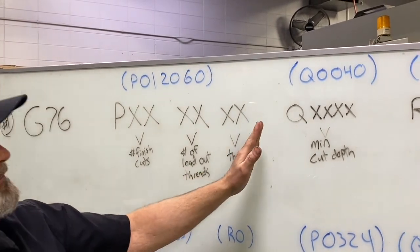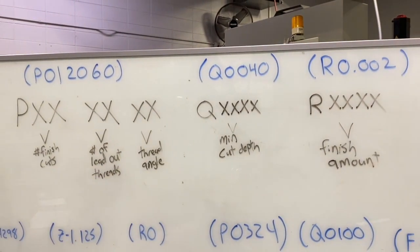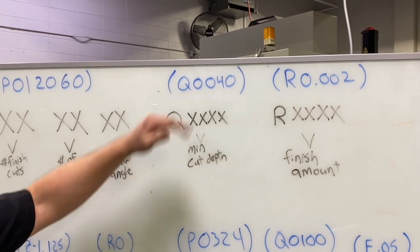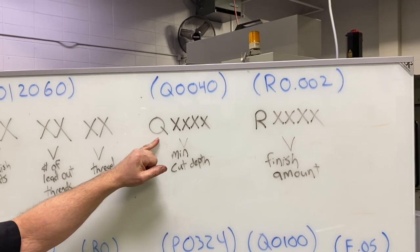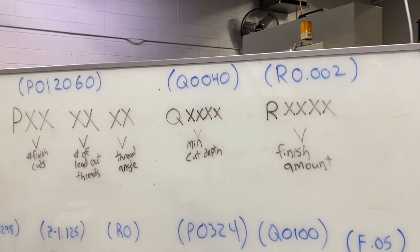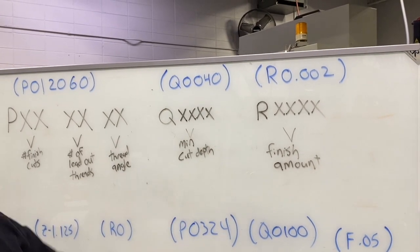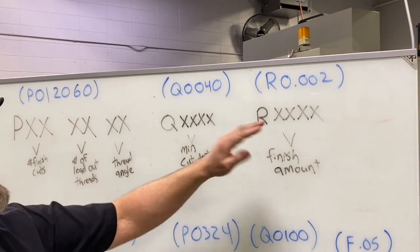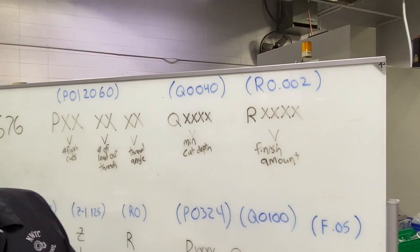The next letter address in the first line is Q, which is our minimal cut depth. As the tool gets deeper into the thread, it progressively takes less and less depth of cut, and this limits that minimum depth. For this instance I'm going four thousandths, entered as four continuous digits with no decimal: Q-zero-zero-four-zero, a minimal cut depth of four thousandths. Finally is our finish amount — the letter address R, which does require a decimal point. For the finish amount I'm going two thousandths: R-point-zero-zero-two.